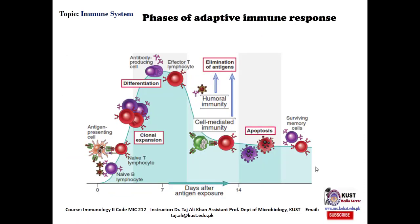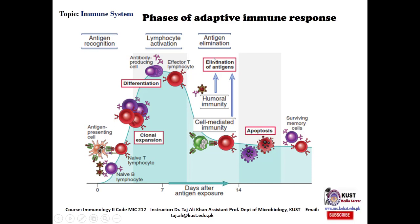The phases of adaptive immune responses: the first phase is antigen recognition, where naive T and B lymphocytes interact and undergo clonal expansion, leading to differentiation into effector cells. These effector cells then eliminate the antigen in the antigen elimination phase. After antigen elimination, the immune system returns to its normal state — homeostasis — during which lymphocytes die by a process called apoptosis. The surviving cells become immune memory cells that respond more rapidly when the same antigen is encountered again.